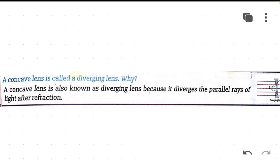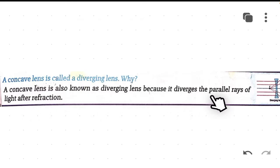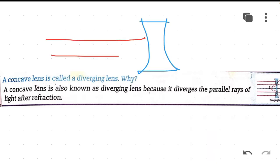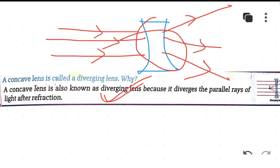Next question: a concave lens is called a diverging lens — why? The answer is that a concave lens is also known as a diverging lens because it diverges the parallel rays of light after refraction. Here in the figure, when parallel rays of light pass through this concave lens, the lens diverges all these parallel rays — the refracted rays spread out in different directions. So this lens is called a diverging lens.